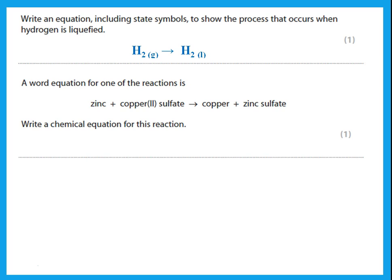A word equation is given — write the chemical equation. Zinc is Zn. For copper II sulfate: the valency of copper is 2 and the valency of sulfate is 2, so they cancel and the formula is CuSO4. This gives copper plus zinc sulfate. Checking the balance: 1 zinc each side, 1 copper each side, 1 sulfur each side, 4 oxygens each side — it is balanced.